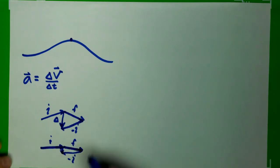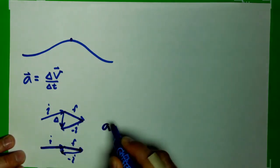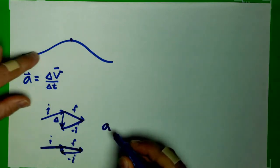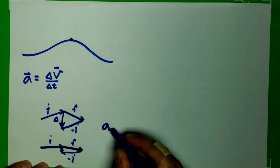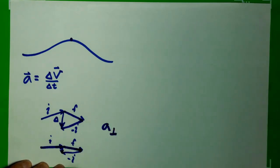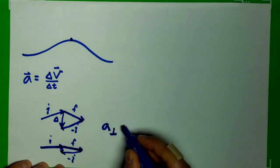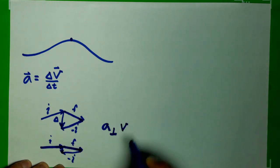Which means that in this case, our acceleration, for the case of this unchanging speed, our acceleration is perpendicular to the velocity. It's perpendicular to the velocity. So my notation here is saying that acceleration is perpendicular to the velocity.